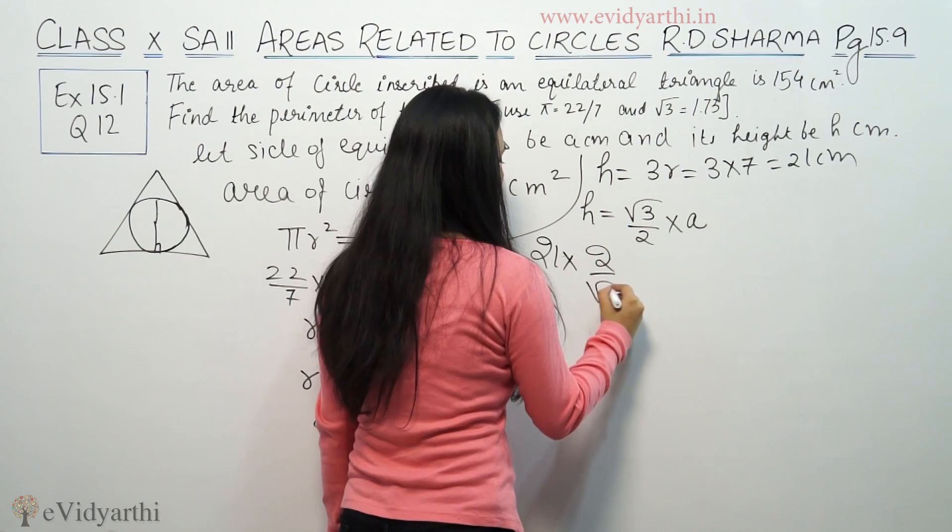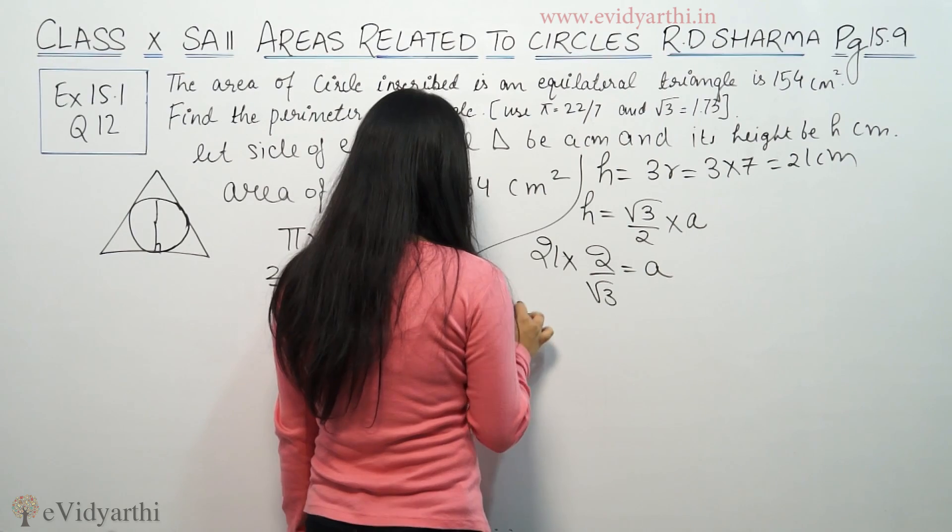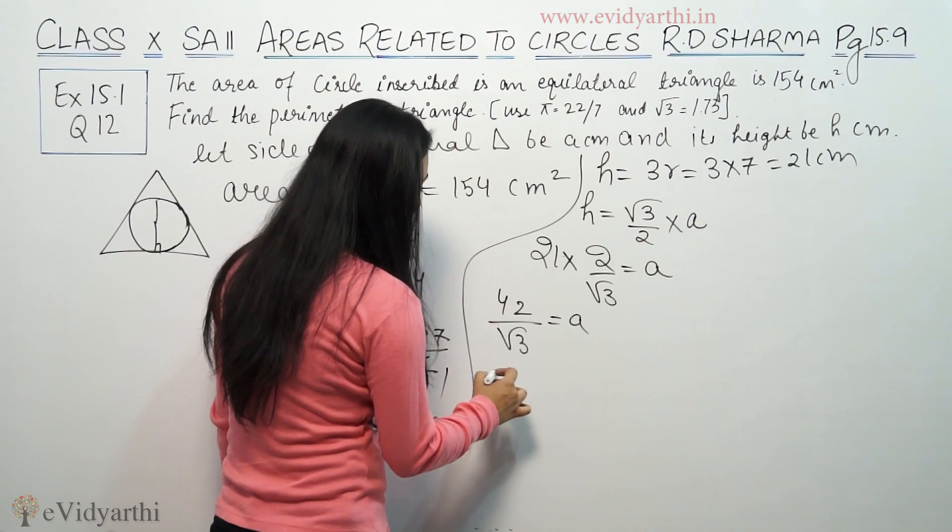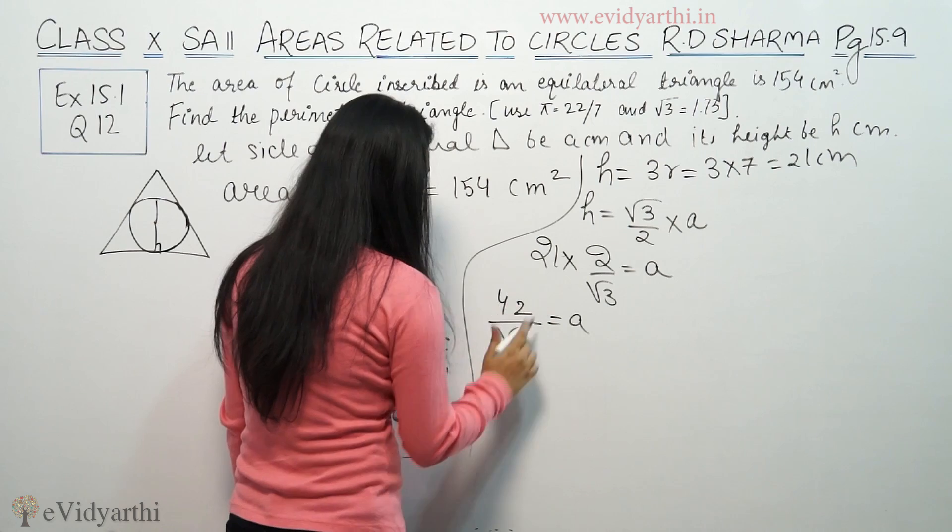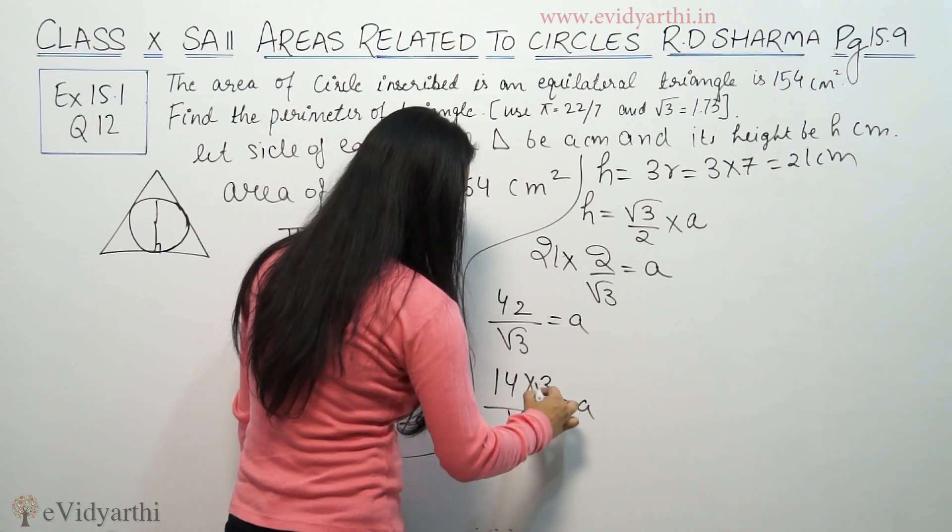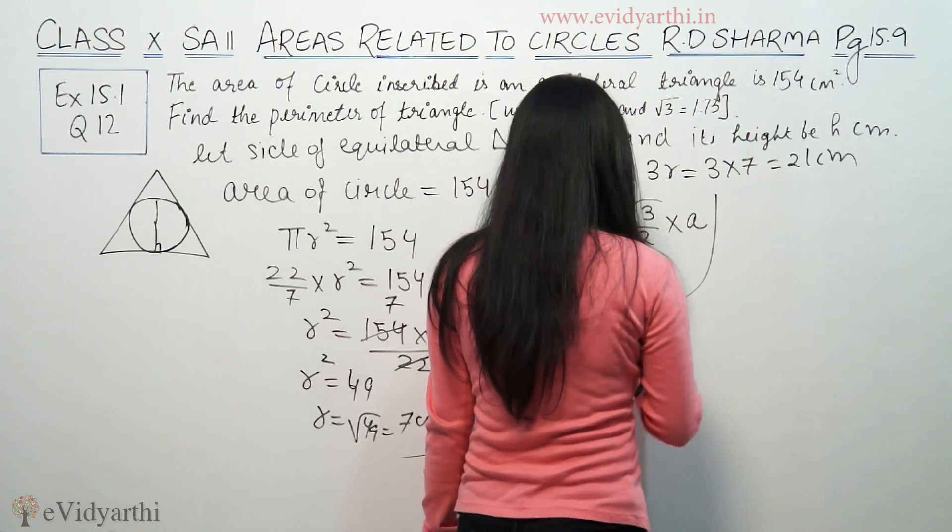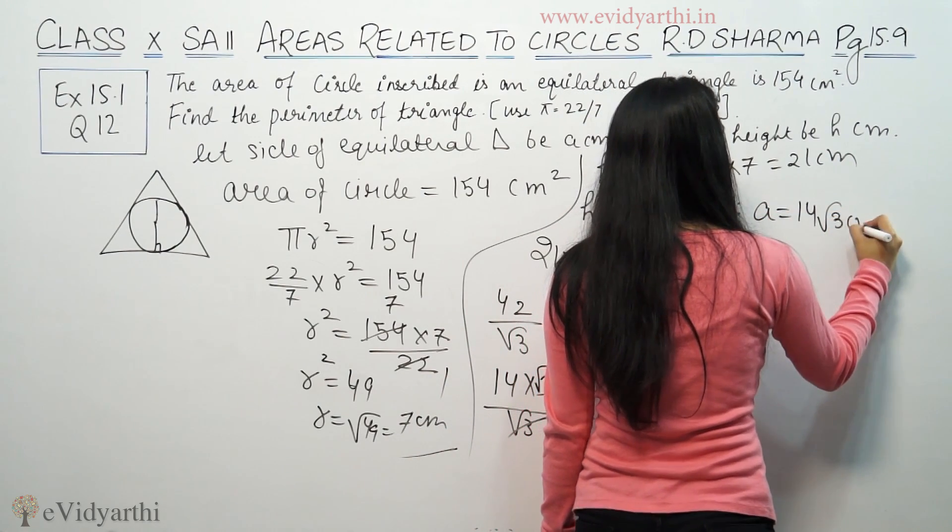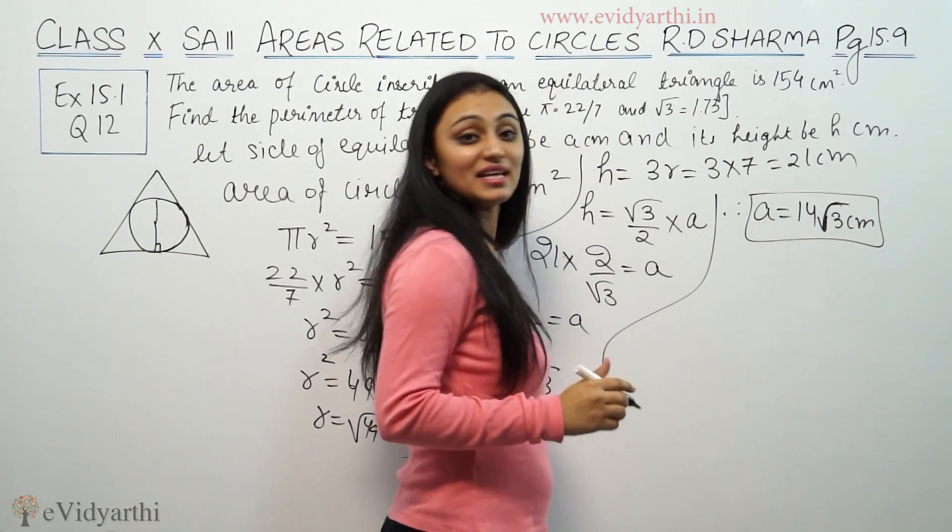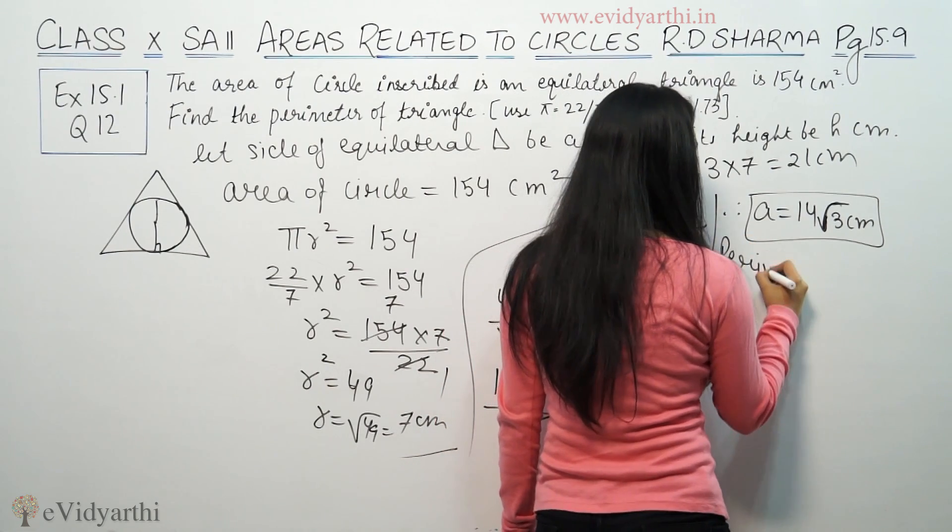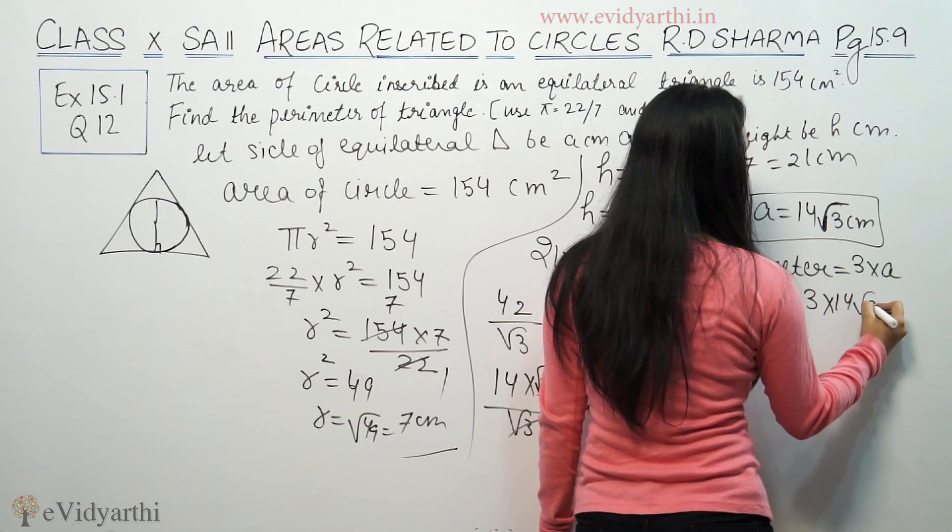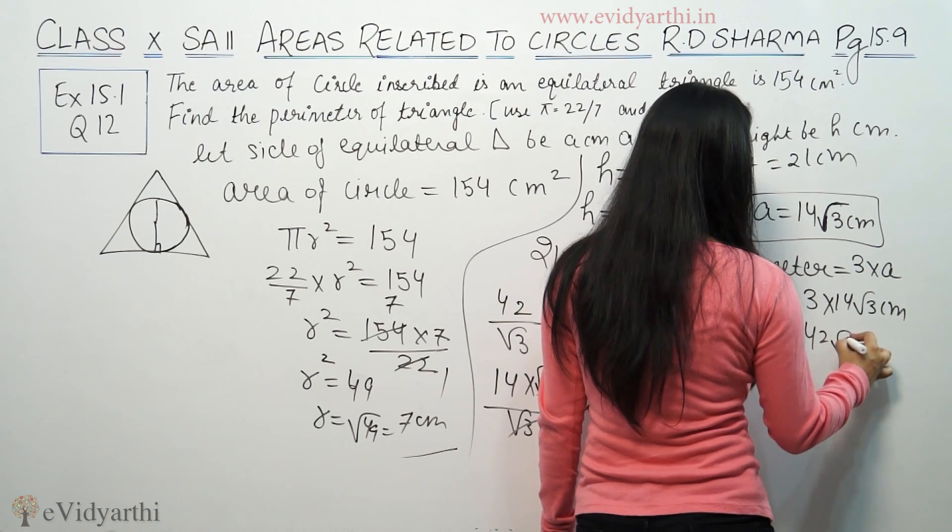So 21 equals √3/2 times a. This gives us a equals 42/√3. Now, the perimeter is 3 times the side, which means 3 times 42/√3, equals 42√3 cm.